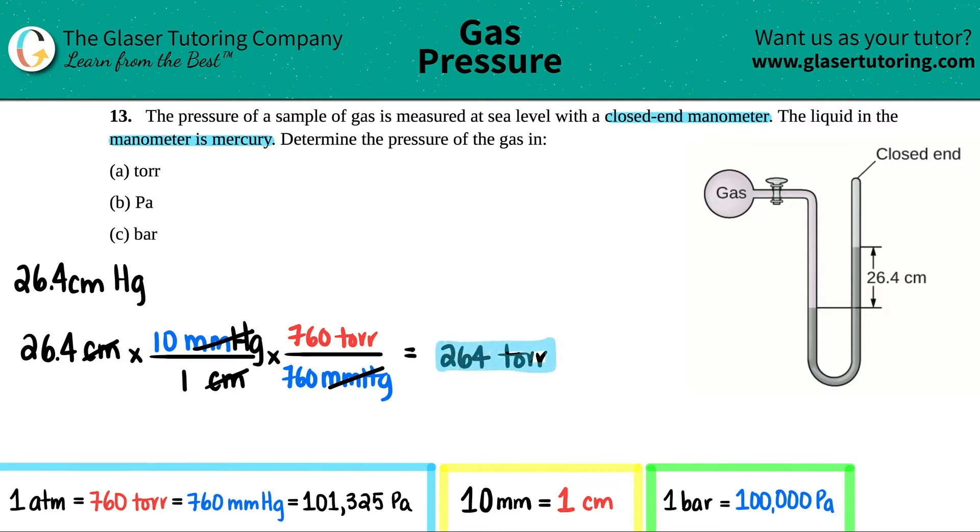Letter A is done. Now let's move on to letter B, pascal. I do see a relationship between pascal and millimeters of mercury, so I would basically, if I take the same initial number so I don't have any rounding issues, I would still have to go to millimeters of mercury. I would still have to do this step, so I can basically get rid of this and just work with my ending result.